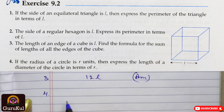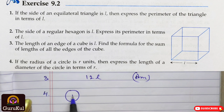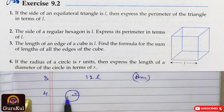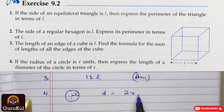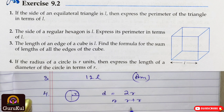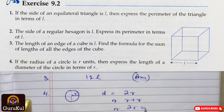Next: if the radius of a circle is R units, then express the length of the diameter of the circle in terms of R. This is the circle, and the radius starts from the center to its edge. This is R, and double the radius is the diameter. So, no doubt, the diameter is equal to 2R, or R plus R. Hence, 2R units.